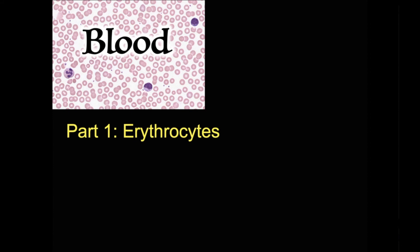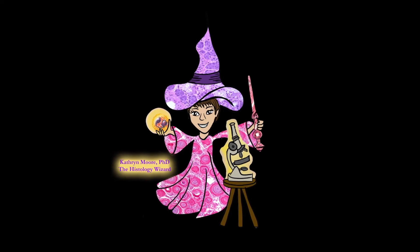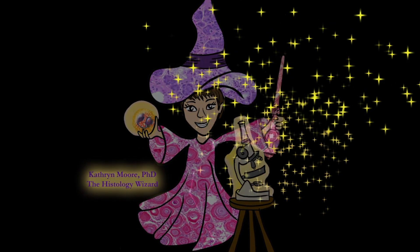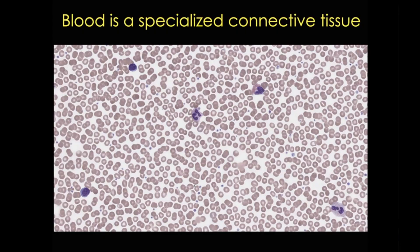Welcome to Blood, Part 1: Erythrocytes. I'm Dr. Katherine Moore, the Histology Wizard. Blood is a specialized connective tissue, and this tutorial is a basic introduction to blood histology where I'll focus on erythrocytes or red blood cells. I'll introduce blood as a tissue, describe red blood cell structure and function, and talk about a few blood disorders along the way. So let's get started.